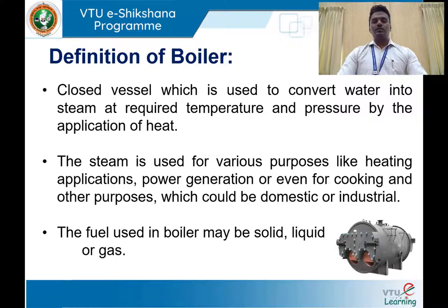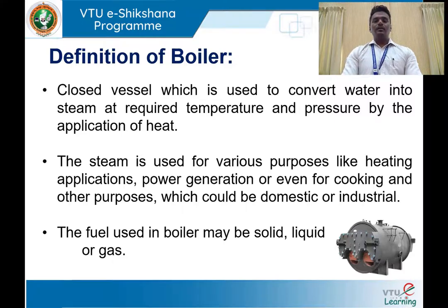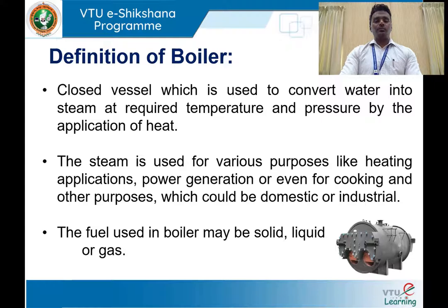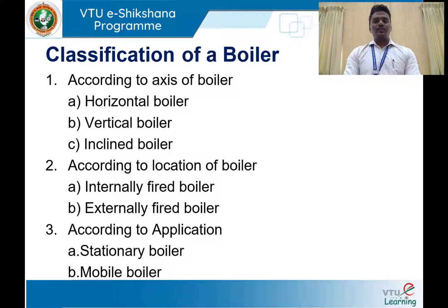The heat required for production of steam can be obtained by combustion of fuels. Fuels can be solid type, liquid type, or gas fuel. In solid fuel type, we can make use of coal, which is one of the basic solid fuels used in fossil fuel type boilers. We can also use petroleum products and gases as fuel for steam generation. Apart from that, we can use electricity to generate steam — that is an electrical boiler.